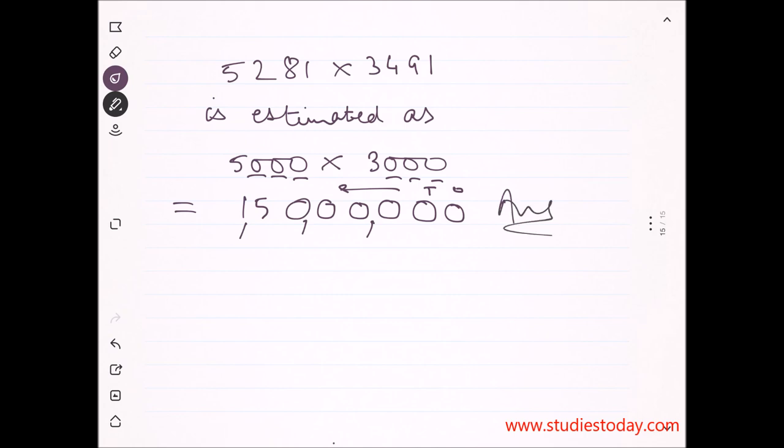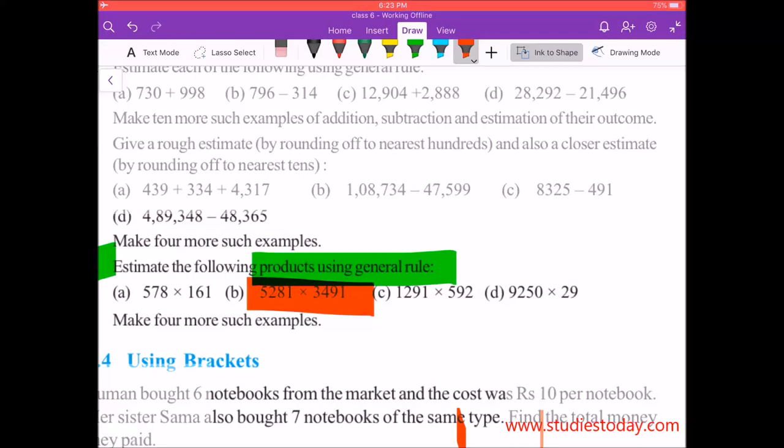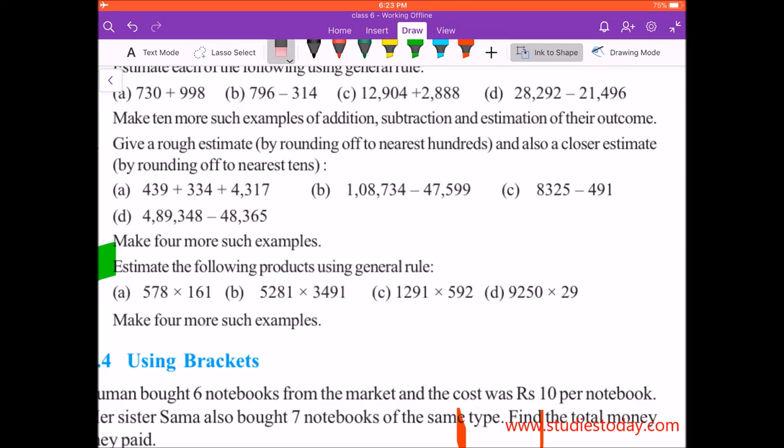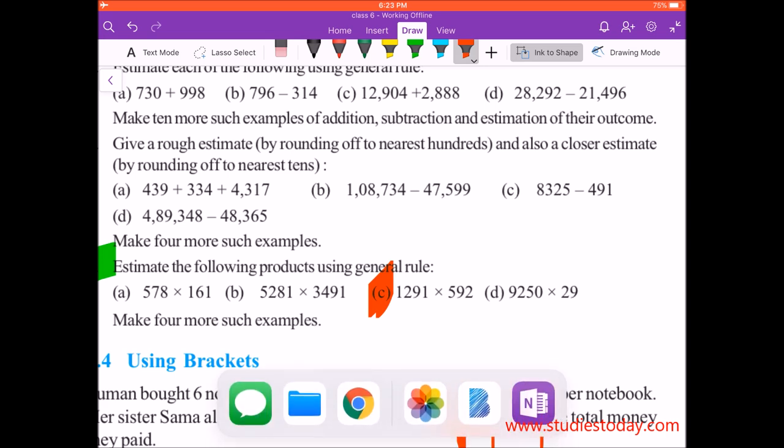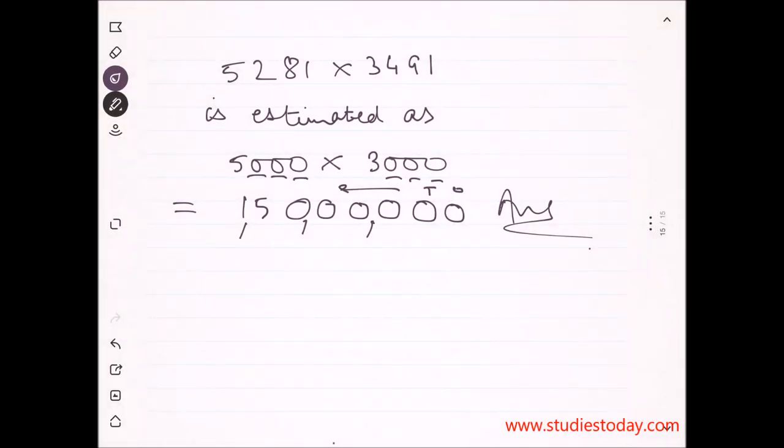Now moving to the next question, part C says 1,291 into 592. Here I have ones, tens, hundreds, thousands for the first number, and ones, tens, hundreds for the second. The greatest place value differs - this is thousands and this is hundreds, so rounding off will be different.